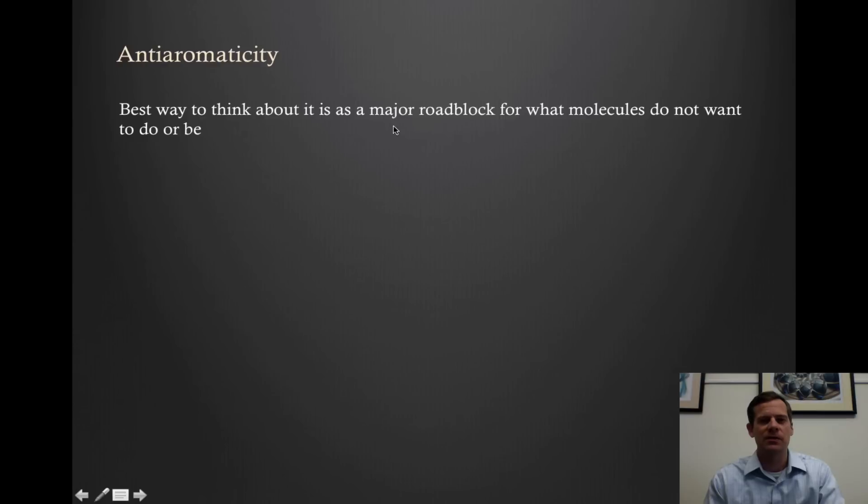The better way to think about antiaromaticity is not something that real-world molecules are going to possess, usually. Instead, what it is is a roadblock. It's a roadblock for what molecules do not want to do or to be. This will be in terms of structures that we won't expect to see, such as planar cyclooctatetraene or cyclobutadienes. But also in terms of transition states. We talked earlier about how aromatic transition states are oftentimes very favorable. For the same reason, if we have transition states that are antiaromatic in character, those are going to be very unfavorable, and so we won't expect to see those. In the next video, we're going to move on and look at some circumstances outside of the typical benzene where aromaticity allows us to see some pretty interesting species.